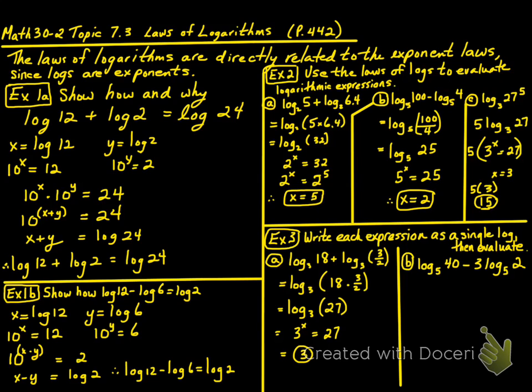We have log₅(40) - 3log₅(2). This equals log₅(40) - log₅(2³).